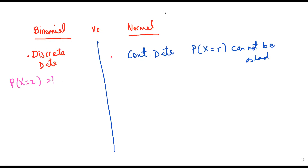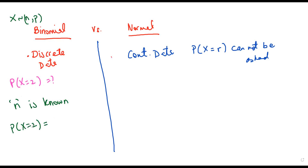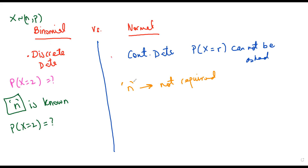In the binomial distribution, n — the number of trials — is known. The parameters are n and the probability of success. When we find the probability that x equals two, we are looking for two successes, and we must know out of how many trials, so n is known in binomial distribution. In the normal distribution, n is purely insignificant — there is no need for n, it is not required.